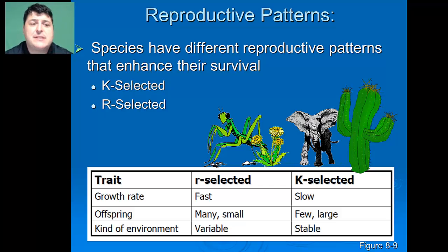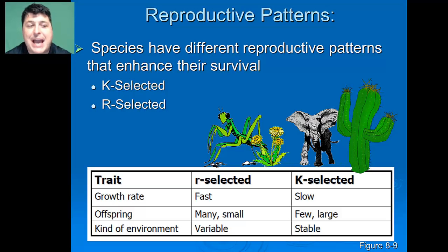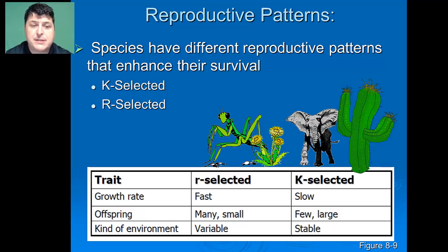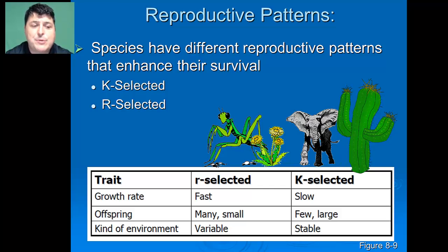Many species have different reproductive patterns that enhance their survival. The two major reproductive patterns are K-selected and R-selected species. R-selected species have a very fast intrinsic rate of increase and a very fast growth rate. They produce lots of offspring, but they're typically small and able to live in various environments, even highly changeable ones. Great examples of R-selected species are insects or dandelions.